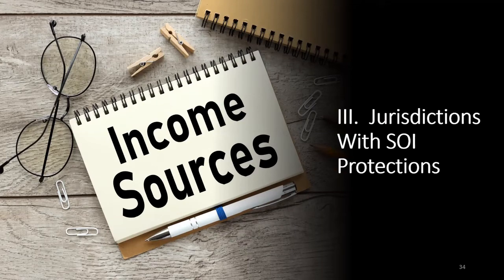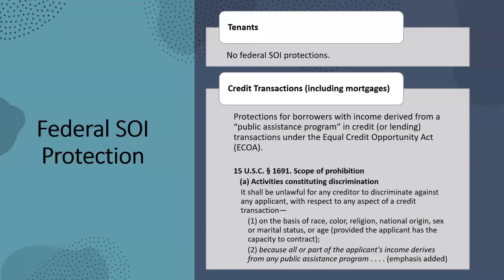At the federal level, there are no federal source of income protections for tenants in rental properties — it's not in the Fair Housing Act. However, for credit transactions including mortgages, the Equal Credit Opportunity Act does prohibit discrimination against applicants whose income derives from a public assistance program. This applies to all types of mortgage lending and all credit transactions.